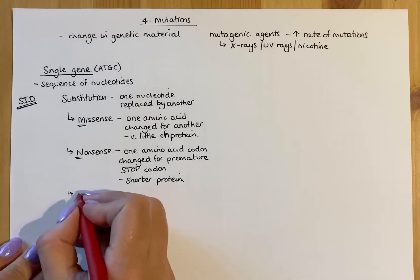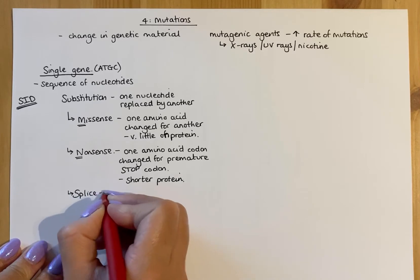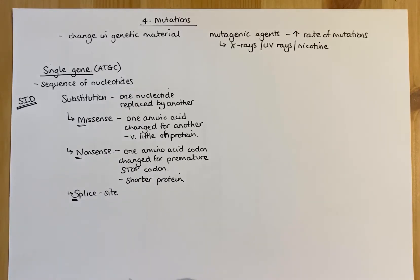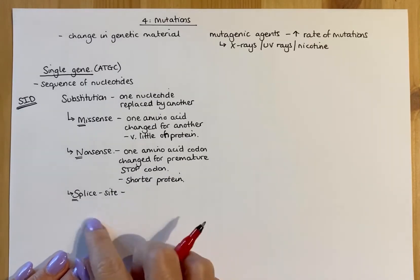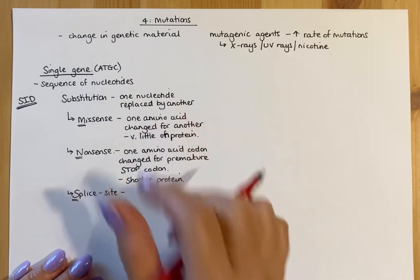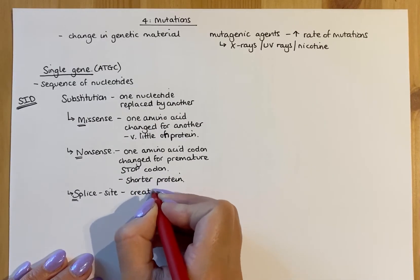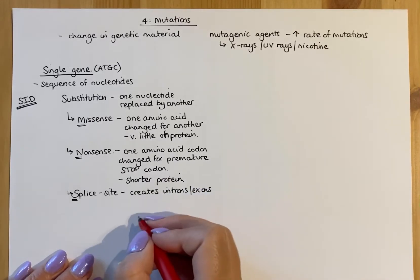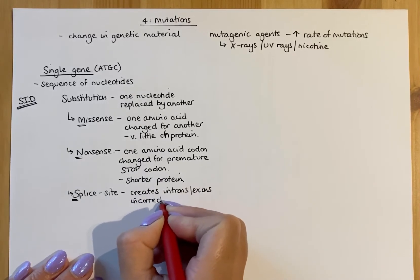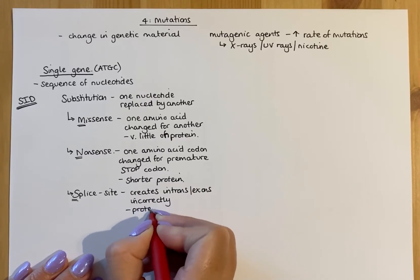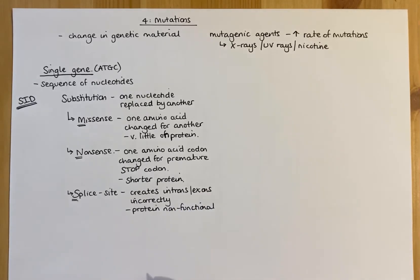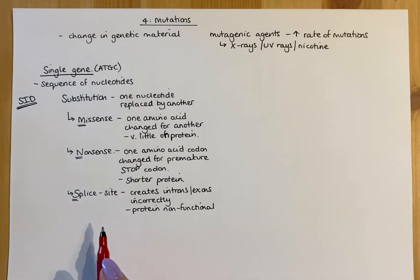The last substitution type is splice site mutation. From gene expression, we know splicing involves cutting out introns and joining exons together. In a splice site mutation, one nucleotide is replaced by another, causing introns or exons to be processed incorrectly. The protein therefore contains amino acids it shouldn't, making it non-functional — it may be produced but won't work due to extra incorrect information. That covers missense, nonsense, and splice site — all substitution mutations.